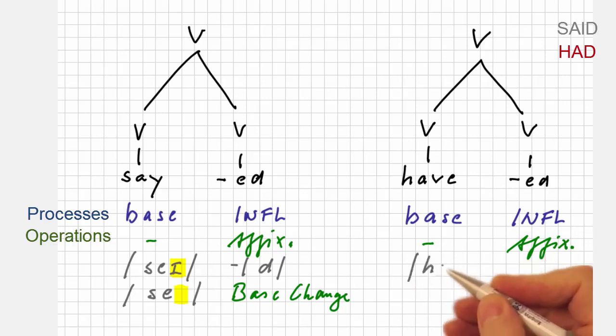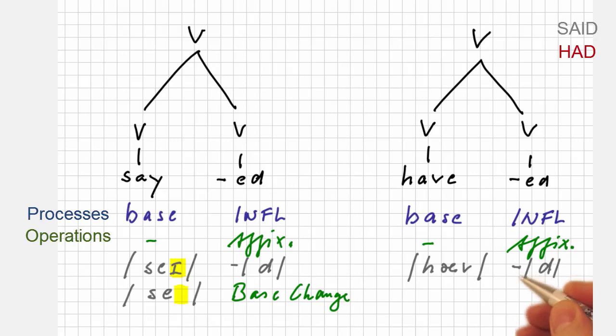However, the examination of the phonological properties tells us that we have a base change, the loss of the final consonant, which is a labiodental fricative. So here we have a combination of affixation with a consonantal base change.